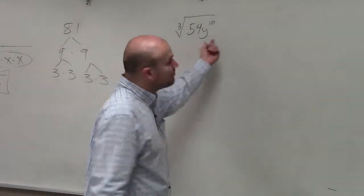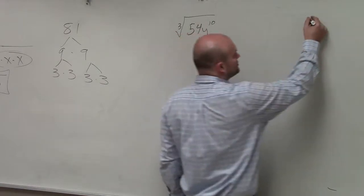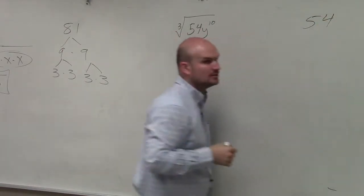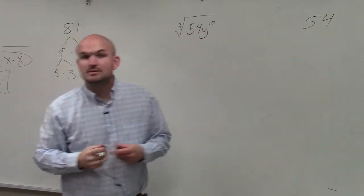Again, you're having trouble with this. Break this down. So 54, what two numbers multiply to give you 54? Anybody? 9 and 6.